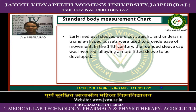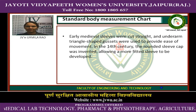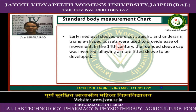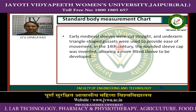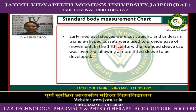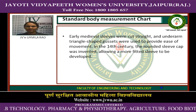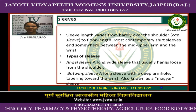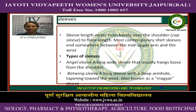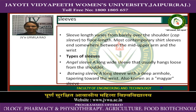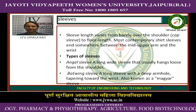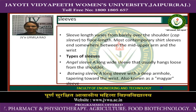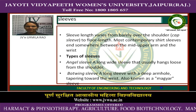Early medieval sleeves were cut straight in the underarm and triangle-shaped gussets were used to provide ease of movement. In the 14th century, the rounded sleeve cap was invented, allowing a more fitted sleeve to be developed. Sleeve length varies from the barely-over-the-shoulder cap sleeve to floor length, with most contemporary shirt sleeves falling somewhere between the mid upper arm and the wrist.